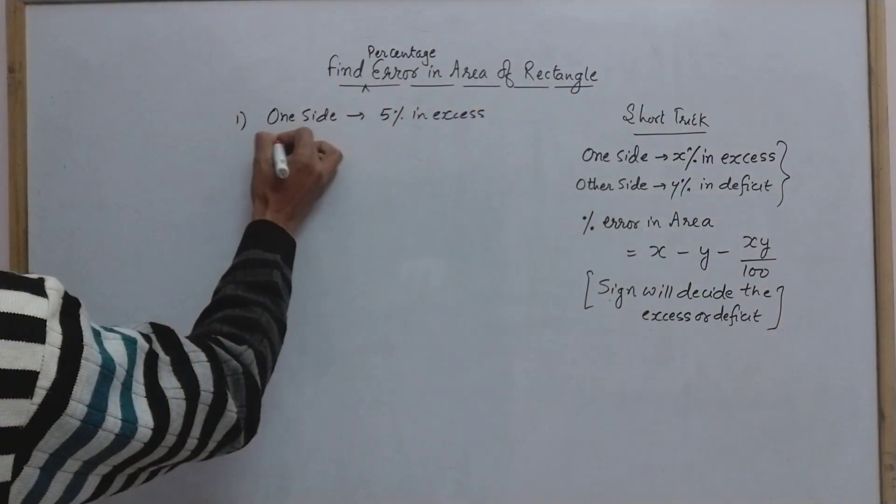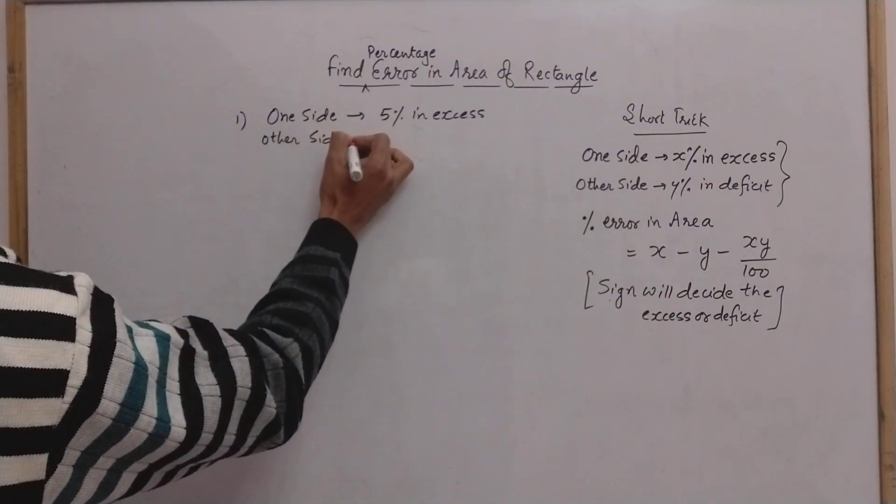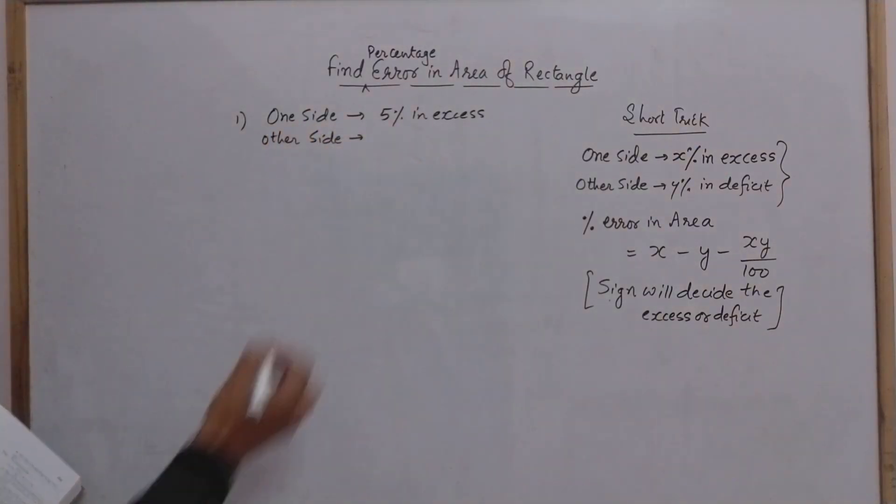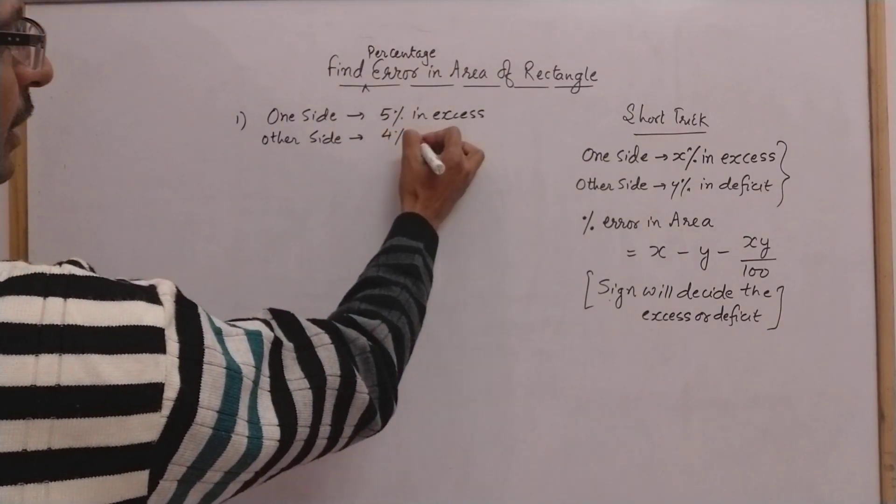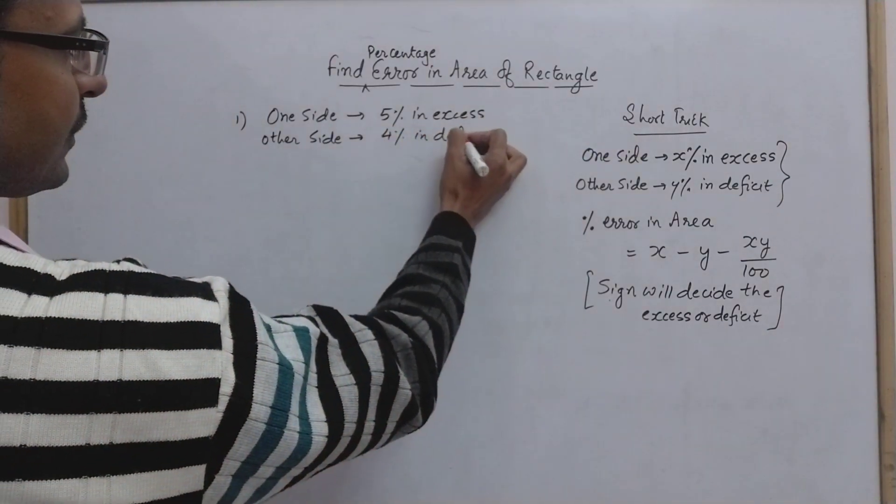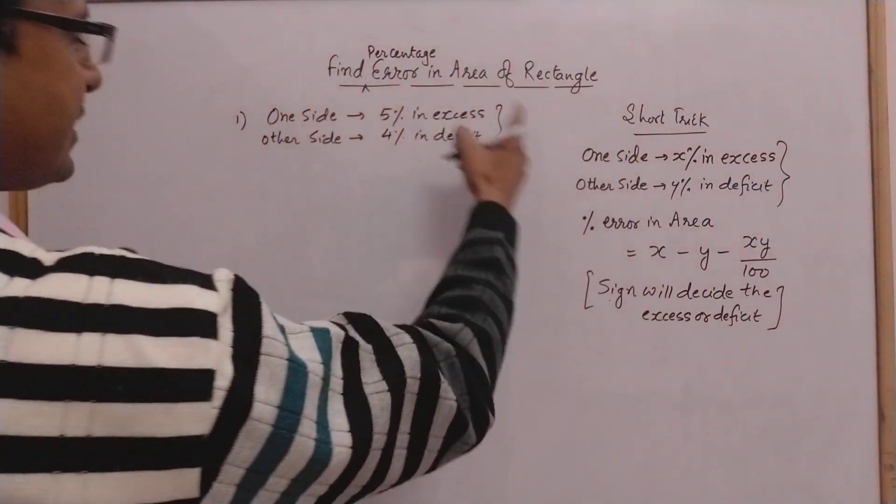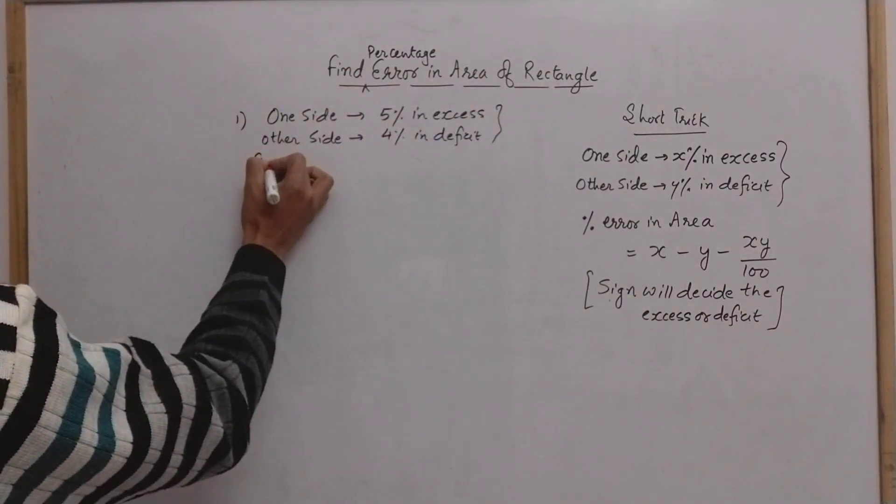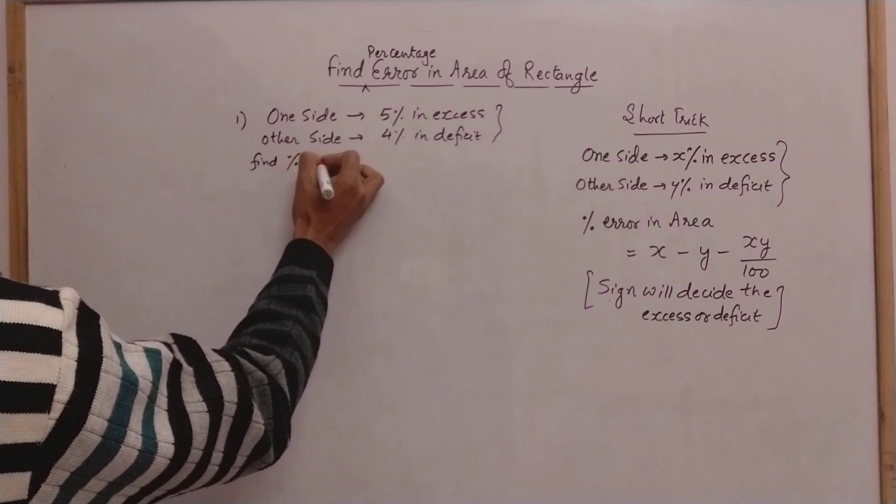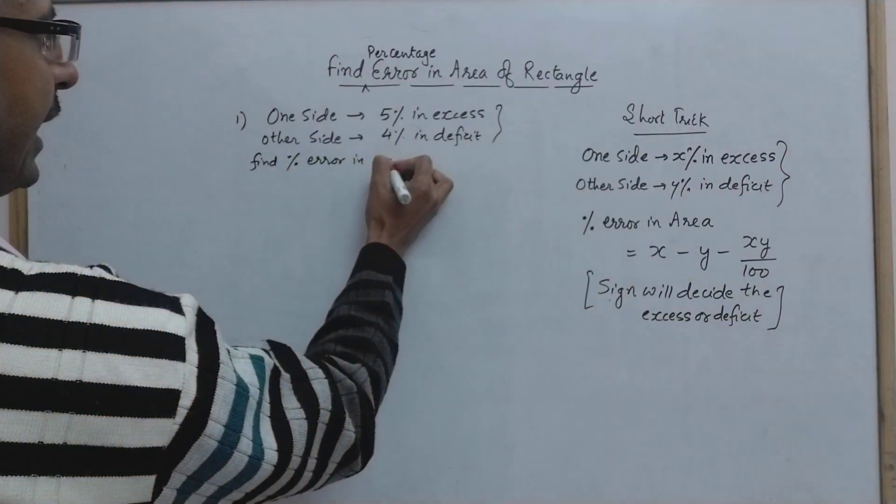The other side is taken 4 percent in deficit. Under these assumptions we need to find the percentage error in area of rectangle.